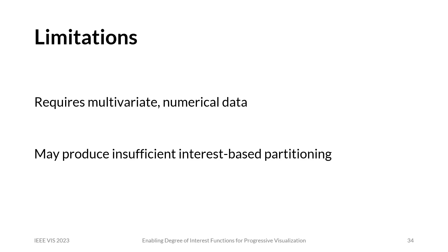I want to close with some discussion points on applicability and limitations of our approach. In order for it to work, we need regression trees to be compatible with our data and DOI functions. This means our approach is intended for multivariate numerical data, and not so much for other data types like text. Another potential limitation is that we assume the regression tree can separate data into partitions based on their interests, which may require some feature engineering and may in the worst case not work for all DOI functions or datasets. More work is necessary to find the clear boundaries of regression trees and DOI functions.